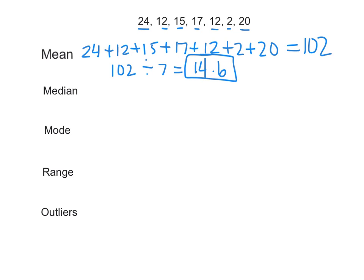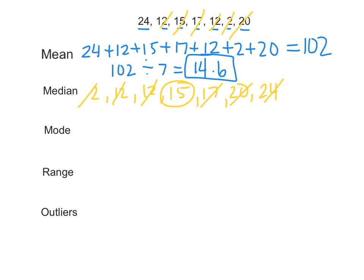Now let's find the median. The median is the middle number. To do that, we're going to put the numbers in order from least to greatest. Starting with the smallest, 2, then 12 — and we have 2 of those — then 15, 17, 20, and 24. Then we cross them out from least to greatest until we have the middle: least, greatest, least, greatest, least, greatest, and now you can see the middle number is 15. So our median is 15.